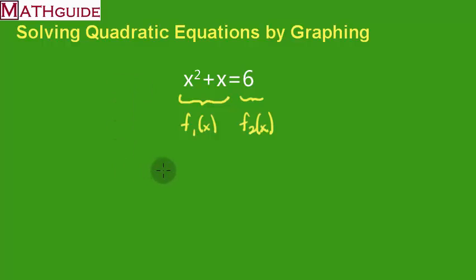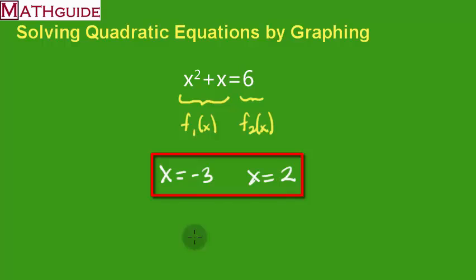So this means that our two answers are x equals negative 3 and x equals 2. So there you have it. I've got my two solutions to this quadratic equation.